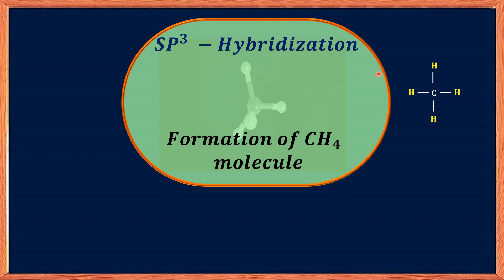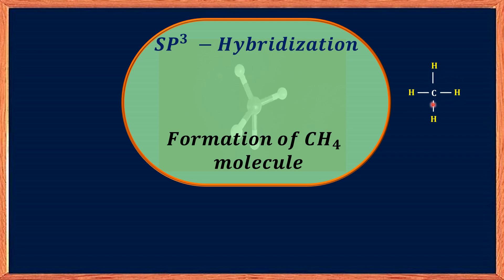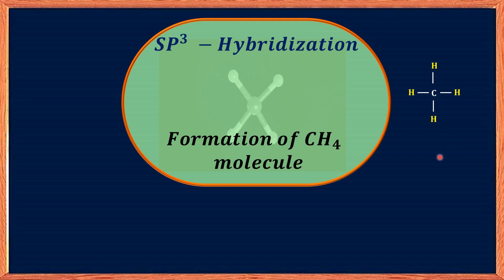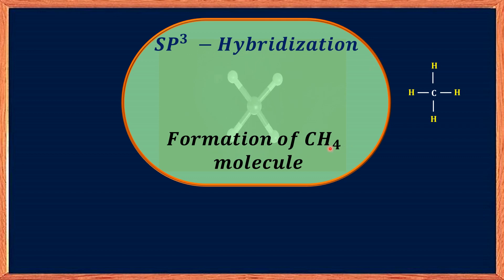Hybridization is the mixing of atomic orbitals to form hybrid orbitals that are better suited for bonding. In the case of carbon, when it forms four covalent bonds — you can see here carbon has formed four covalent bonds with four hydrogen atoms — it undergoes SP3 hybridization, where one 2S and three 2P orbitals combine to form four SP3 hybrid orbitals. Let us dive into the details of SP3 hybridization and the formation of the CH4 molecule.